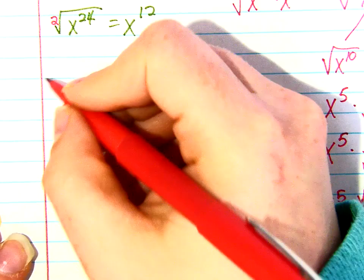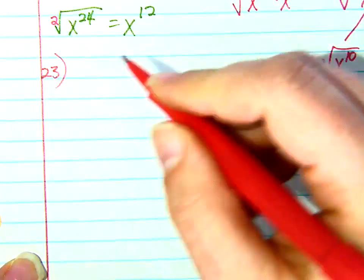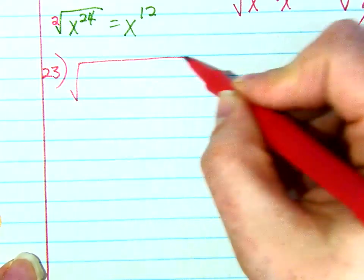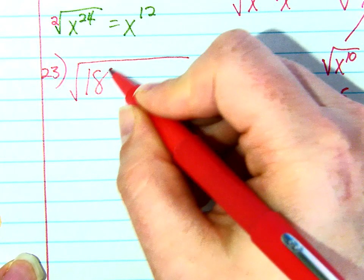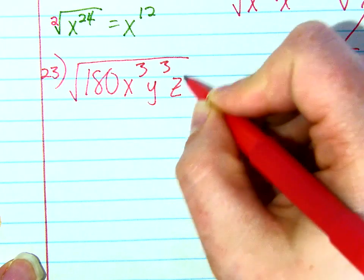We're going to go over number 23 from the homework, which looked like this. You had a big old square root of 180, x to the third, y to the third, z to the fourth.